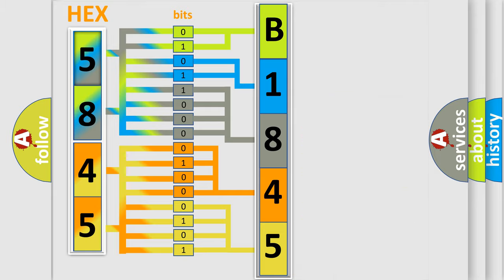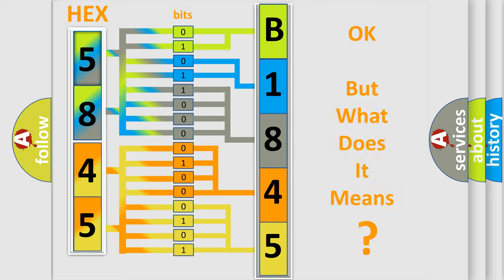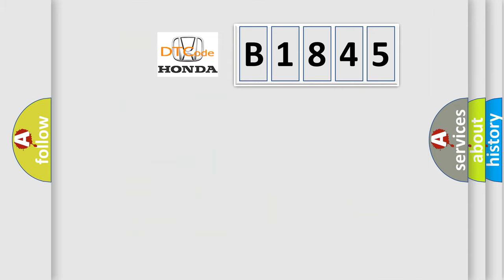We now know in what way the diagnostic tool translates the received information into a more comprehensible format. The number itself does not make sense to us if we cannot assign information about what it actually expresses. So, what does the diagnostic trouble code B1845 interpret specifically for Honda car manufacturers?